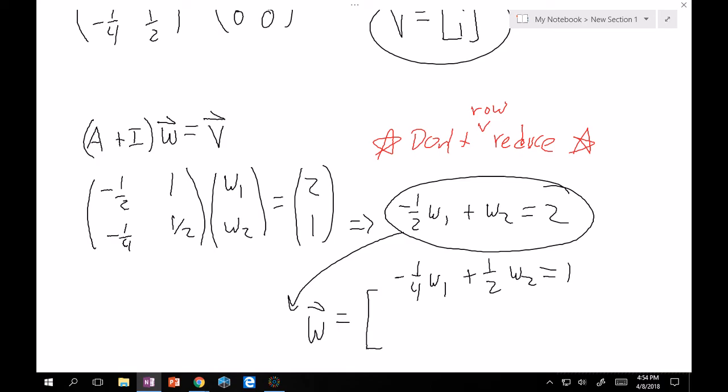So, just ask yourself, what kind of W vector satisfies this? And the answer is, hmm, anything that satisfies this equation will work. So, I'm going to pick the easiest one, which is, to me, 0, 2. Very easily, you could have also picked, what is it, minus 4? Yeah, minus 4, 0. That's also fine. But, to me, this is easy. So, I chose this one.